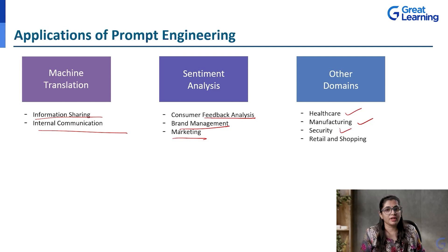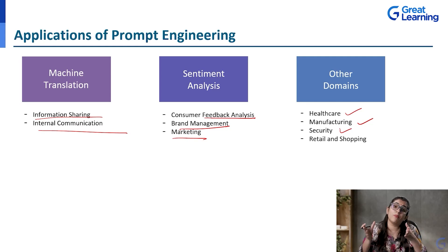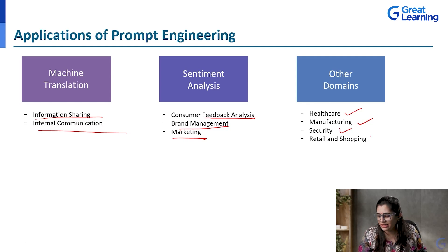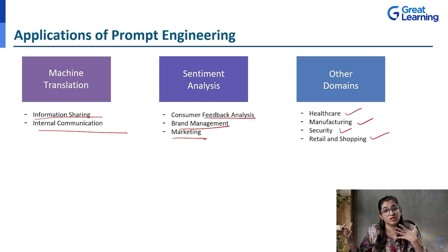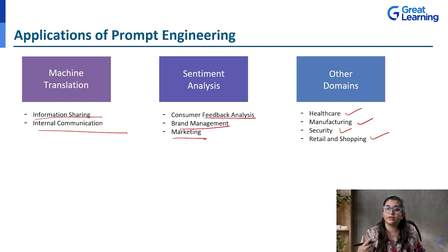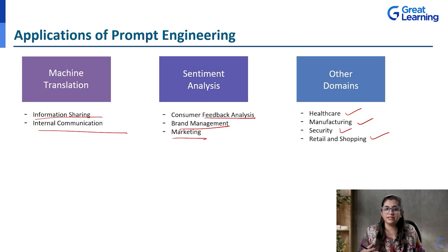Then comes security. There are attacks, and there are a lot of AI tools that can be used to prevent those attacks and protect your systems. Last is retail and shopping — that is e-commerce. On OTT platforms or shopping sites like Myntra and Amazon, generative models can take in your preferences, and when you prompt what you want, it helps you with retail and shopping. So, these are the various applications of prompt engineering.